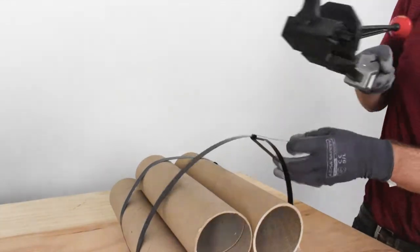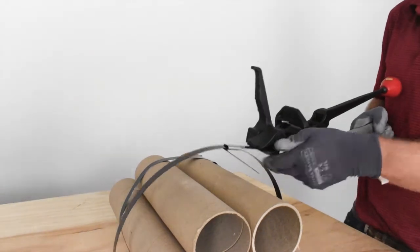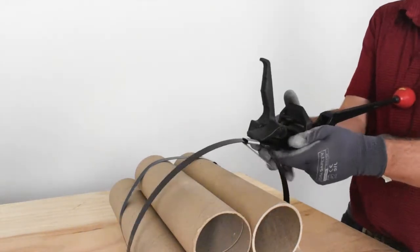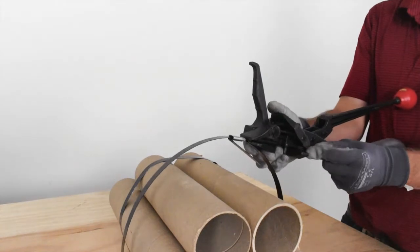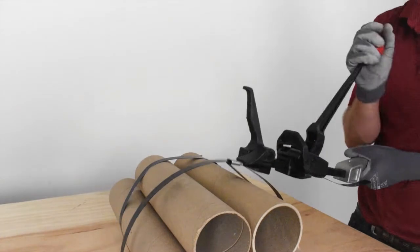Taking our 1650, we're going to slide the strap through the nose and then press this paddle down here to raise up the gripper foot. Once we have our strap in there, we're ready to start tensioning.